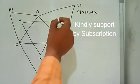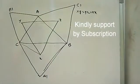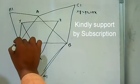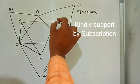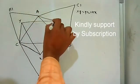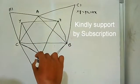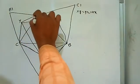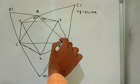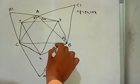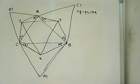So first, since these are centroids, let's draw CX and CY. As these are centroids, these angles are all 30 degrees.